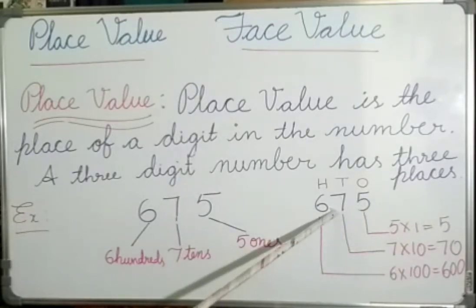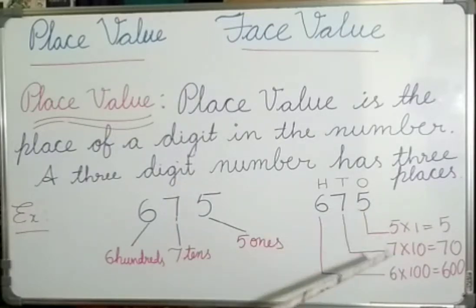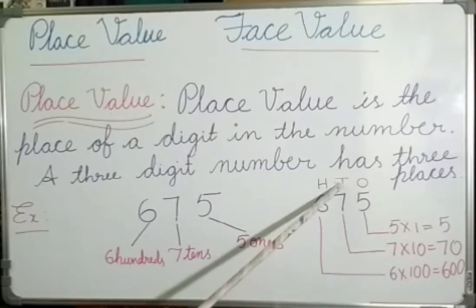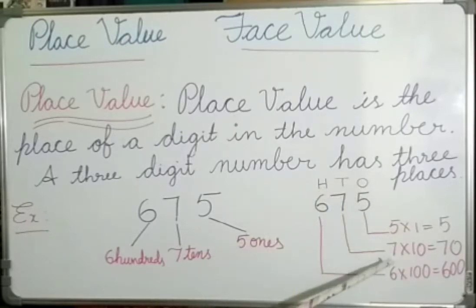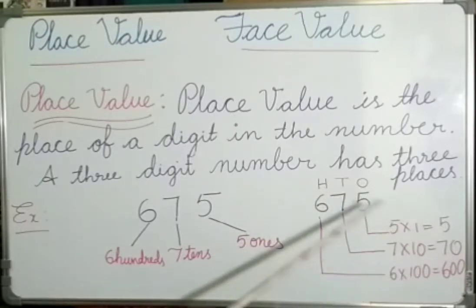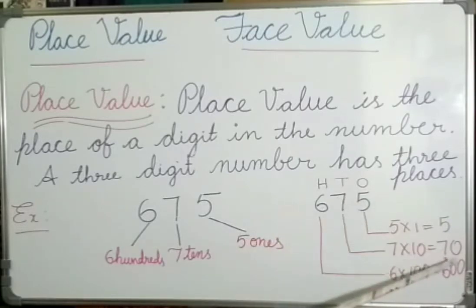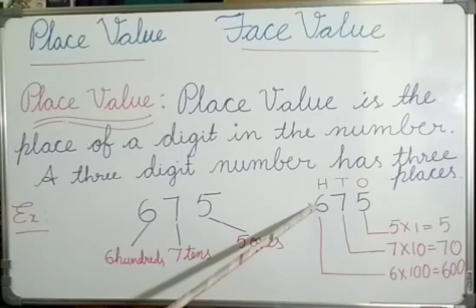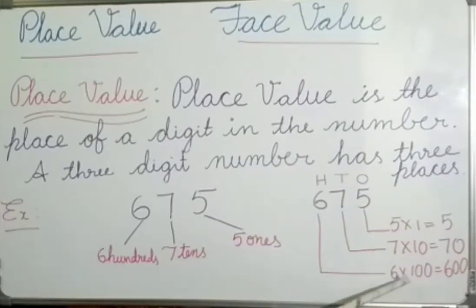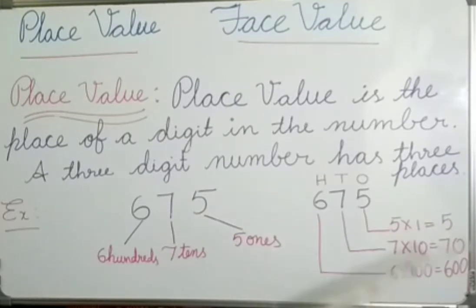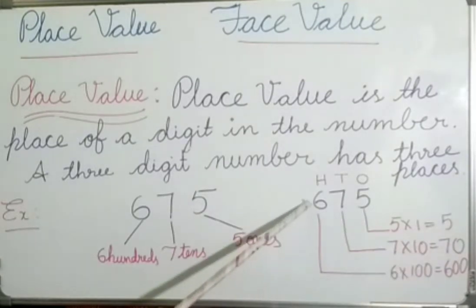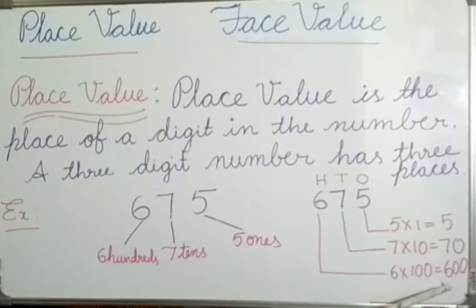The place value of 7 is 7 × 10, that is 7 tens, or 70. So the place value of 7 is 70. And 6 — 6 × 100, that is 6 hundreds. So the place value of 6 is 600.